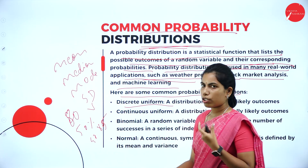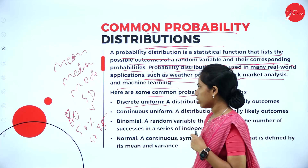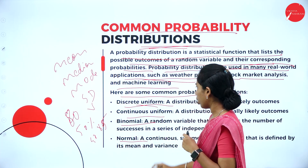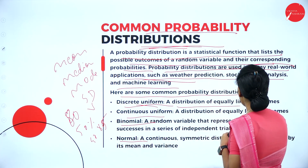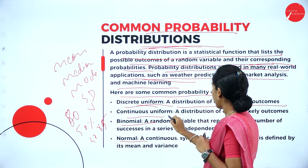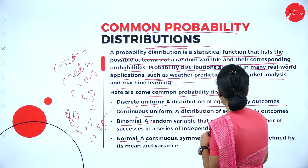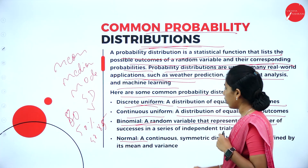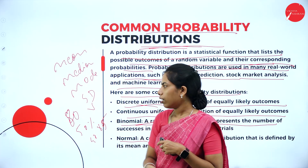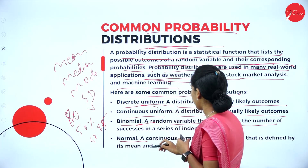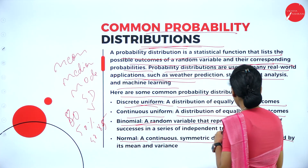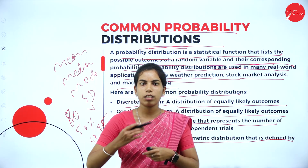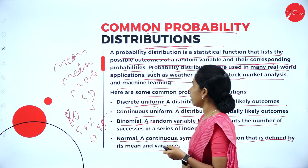Here are some common probability distributions. The types of distribution are: continuous, uniform, discrete, binomial, and normal. Discrete distributions have equally likely outcomes. Binomial distributions involve a random variable that can take two values. Normal distributions are continuous, symmetric, and defined by mean and variance. Let's discuss each distribution in detail.